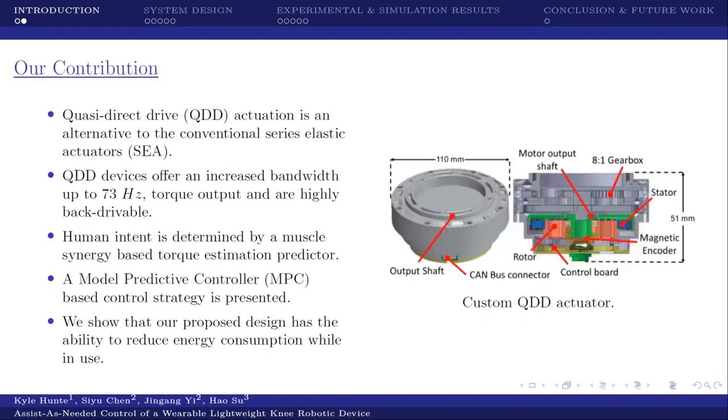For our contribution into this area, what we aim to do is to utilize a quasi-direct drive, which has been developed at City College. The reason why we use this device is that this device has an increased bandwidth over conventional series elastic actuators. The output torque is relatively high. It is also highly back-drivable. Our intent detection system that we use is based on a synergy-based neural torque predictor. We use a model predictive controller as our control strategy, and we show in the end that this design that we came up with has the ability to reduce energy consumption of the limbs that the device is attached to.